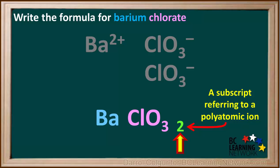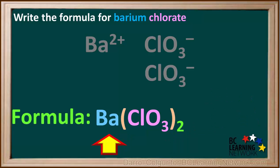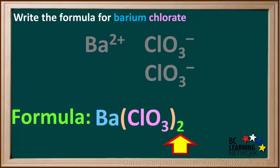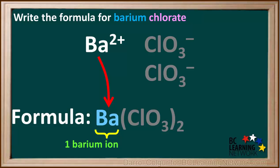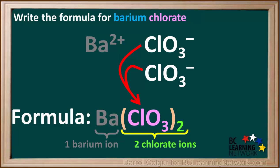There is one Ba ion and two chlorate ions. The subscript 2 to the right of ClO3 means there are two chlorate ions in the formula. Whenever a subscript refers to a polyatomic ion, brackets must be drawn around the polyatomic ion. And now we have the final formula for barium chlorate: Ba(ClO3)2. The formula tells us that the compound barium chlorate has one barium ion and two chlorate ions.